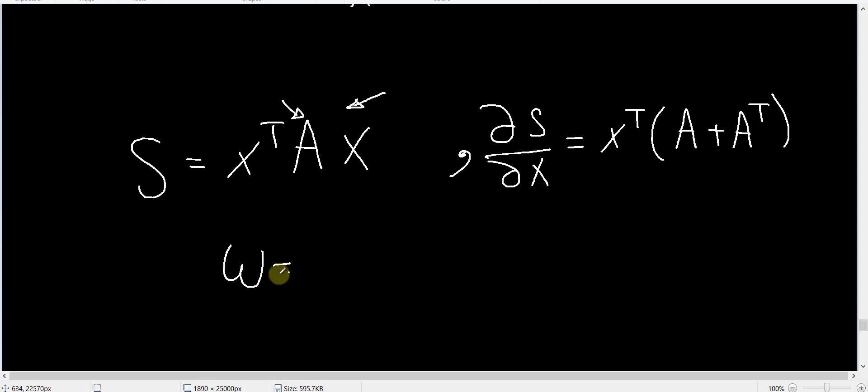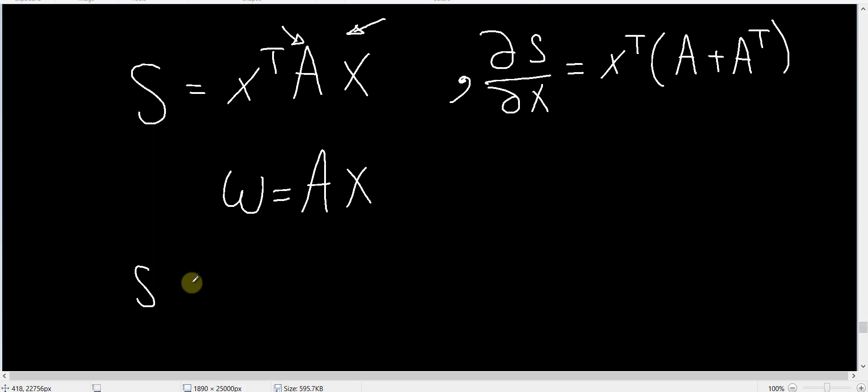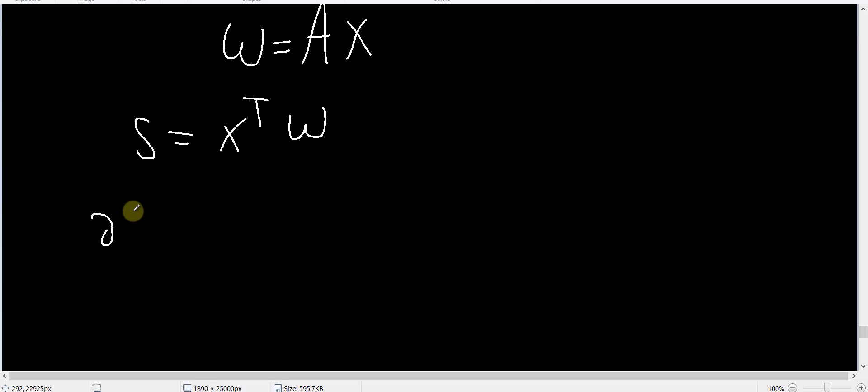First, let W be equal to AX. Now S is really equal to X transpose multiplied by W. Now we know from the product rule for the dot product that partial S by partial X is really equal to X transpose partial W by partial X plus W transpose partial X by partial X.